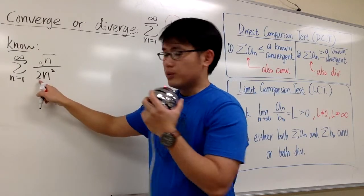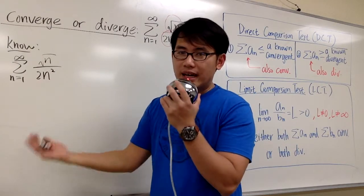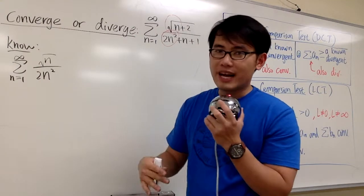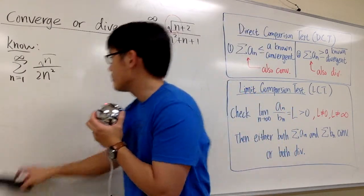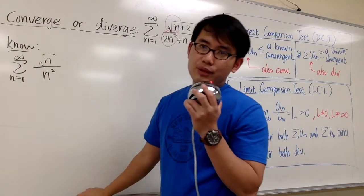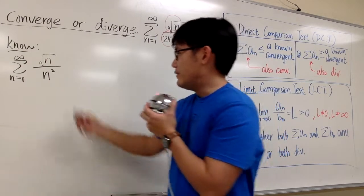You don't need to include 2 if you don't want to, because a constant multiple doesn't change if it converges or not. So perhaps if you would like better, let's not have the 2. Doesn't really matter. If you have the 2, it's fine too.